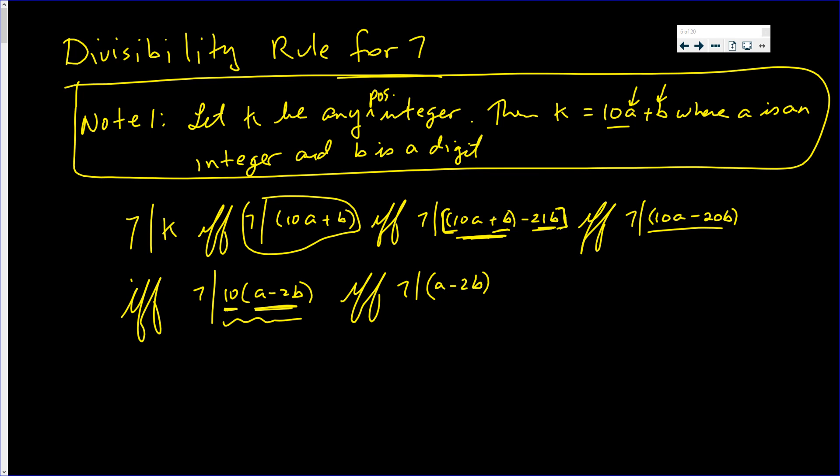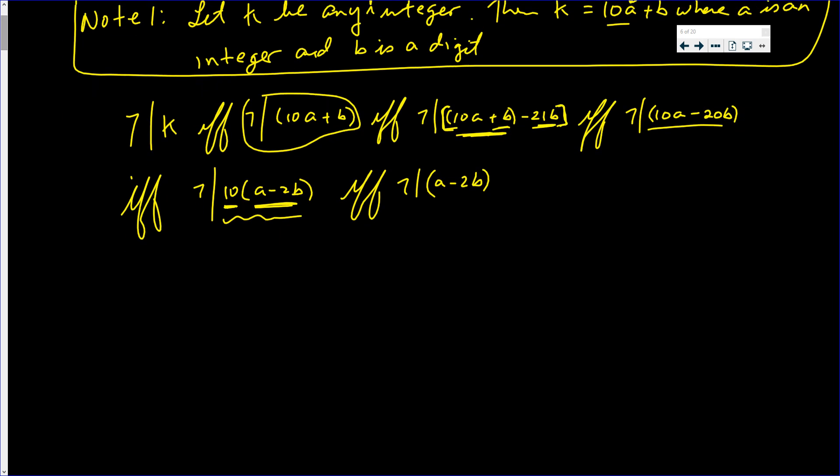Let's try to do this with an example. Suppose you have 7354214, and we want to know if 7 goes into this. Well, that's our a, that's our b.